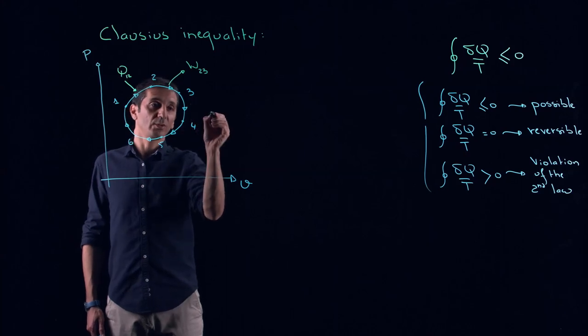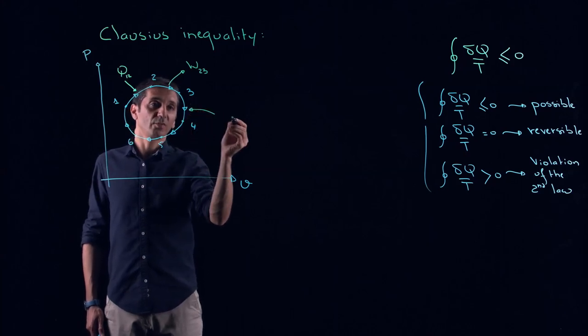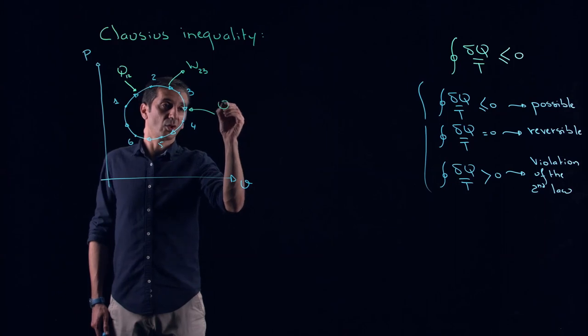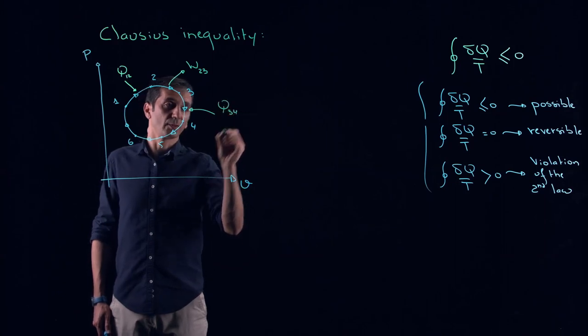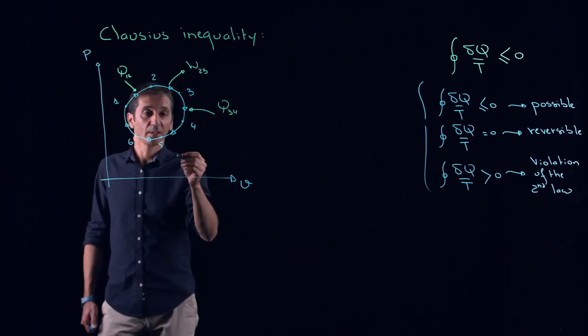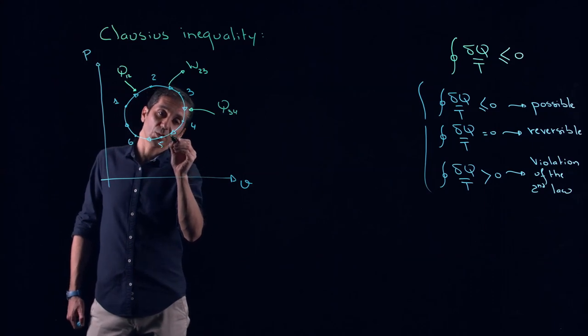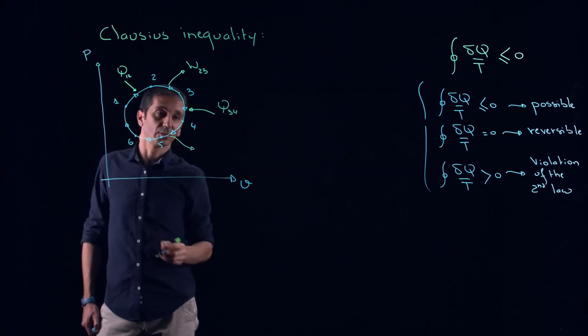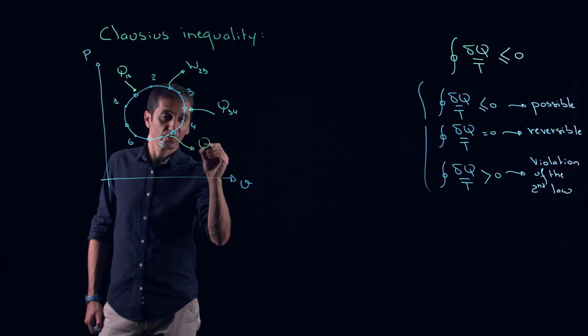Here, actually, from 3 to 4, heat is provided to the system, and let's call it Q3,4. Here, heat is rejected, and let's call it Q4,5.